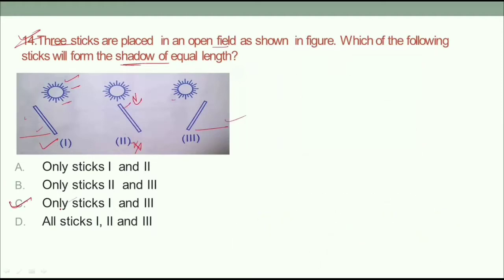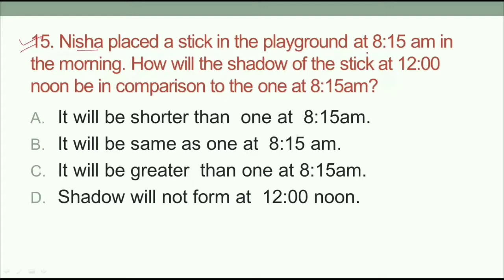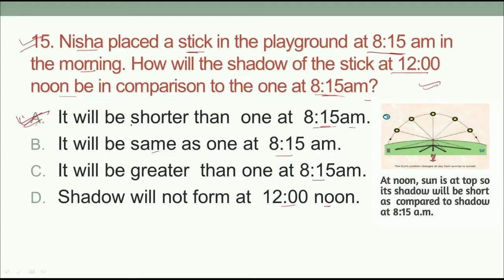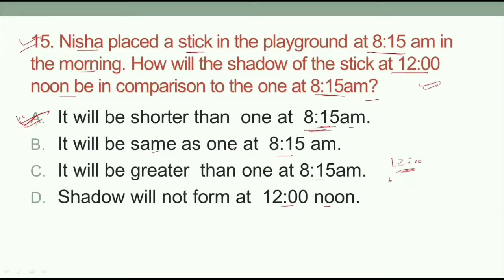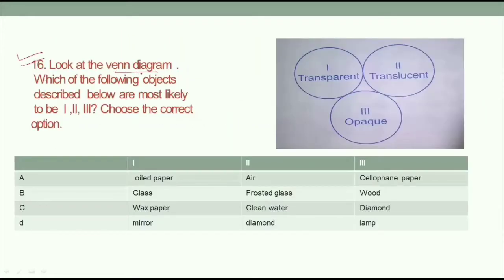Question number 15: Nisha placed a stick in a playground at 8:15 AM in the morning. How will the shadow of the stick at 12 noon compare to the one at 8:15 AM? Option A: it will be shorter than the one at 8:15 AM. Option B: the same. Option C: greater. Option D: shadow will not form at 12 noon. In the morning or evening shadows are larger compared to noon, because at noon the sun is at the top. So our answer is option A — it will be shorter than the one at 8:15 AM.